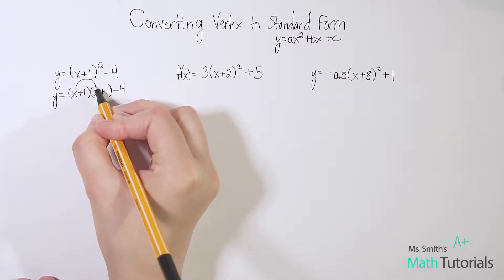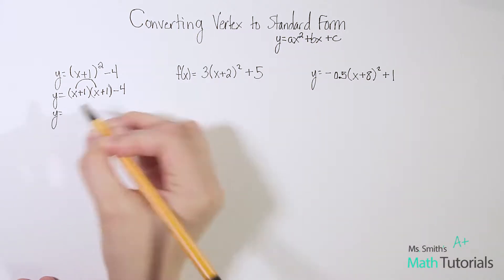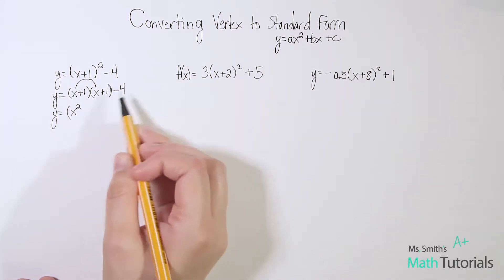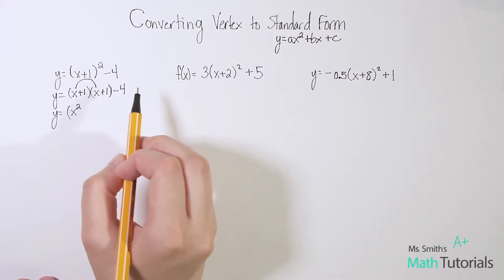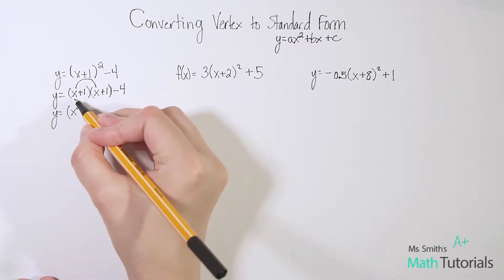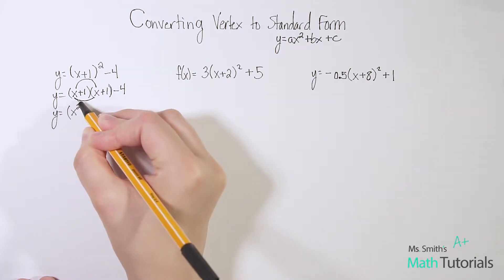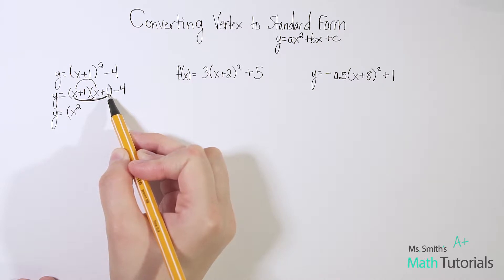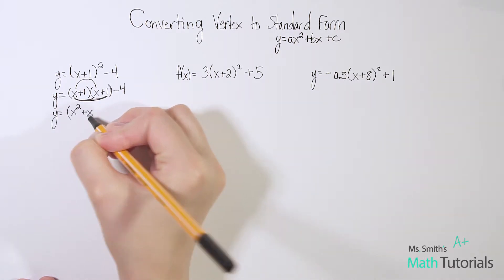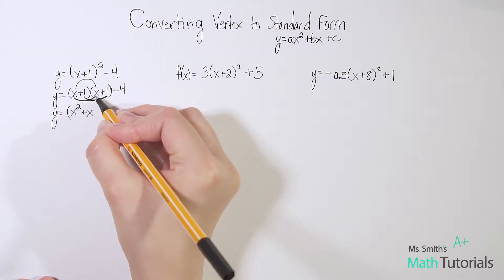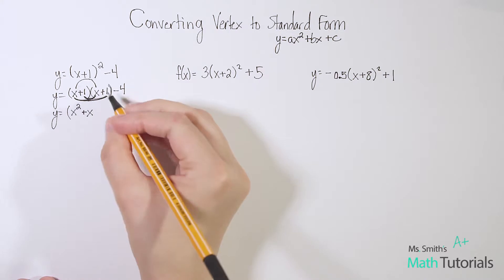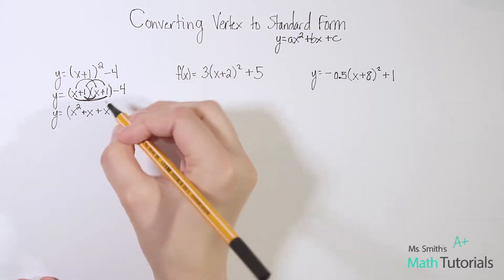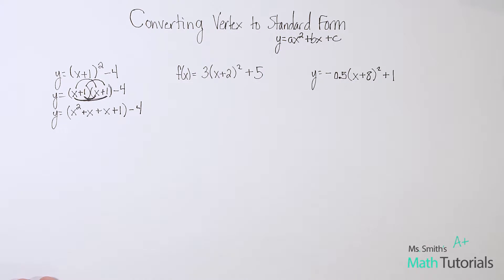Remember foil, the F means first. Let's go ahead and rewrite it: x times x which is x². I'm using parentheses so we can really see it's separate from this -4. Our outer: x times 1 is +1x or just x. Now our inner: 1 times x is +1x or just x. And our last: 1 times 1 is just 1.